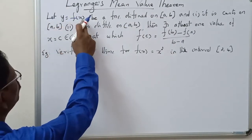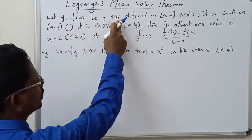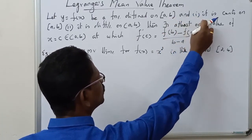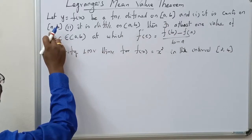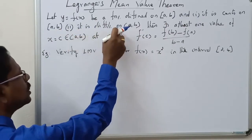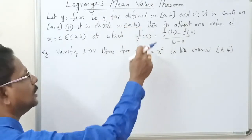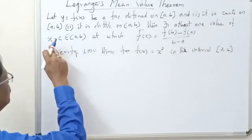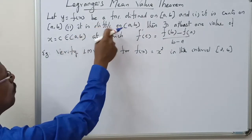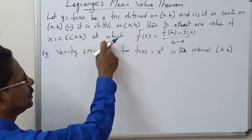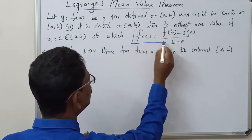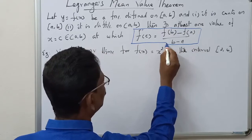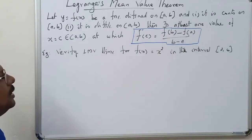Statement: let y = f(x) be a function defined on closed interval [a, b]. First condition: it is continuous on closed interval [a, b], and it is differentiable on open interval (a, b). Then there exists at least one value x = c belonging to open interval (a, b) such that f'(c) = [f(b) - f(a)] / (b - a).